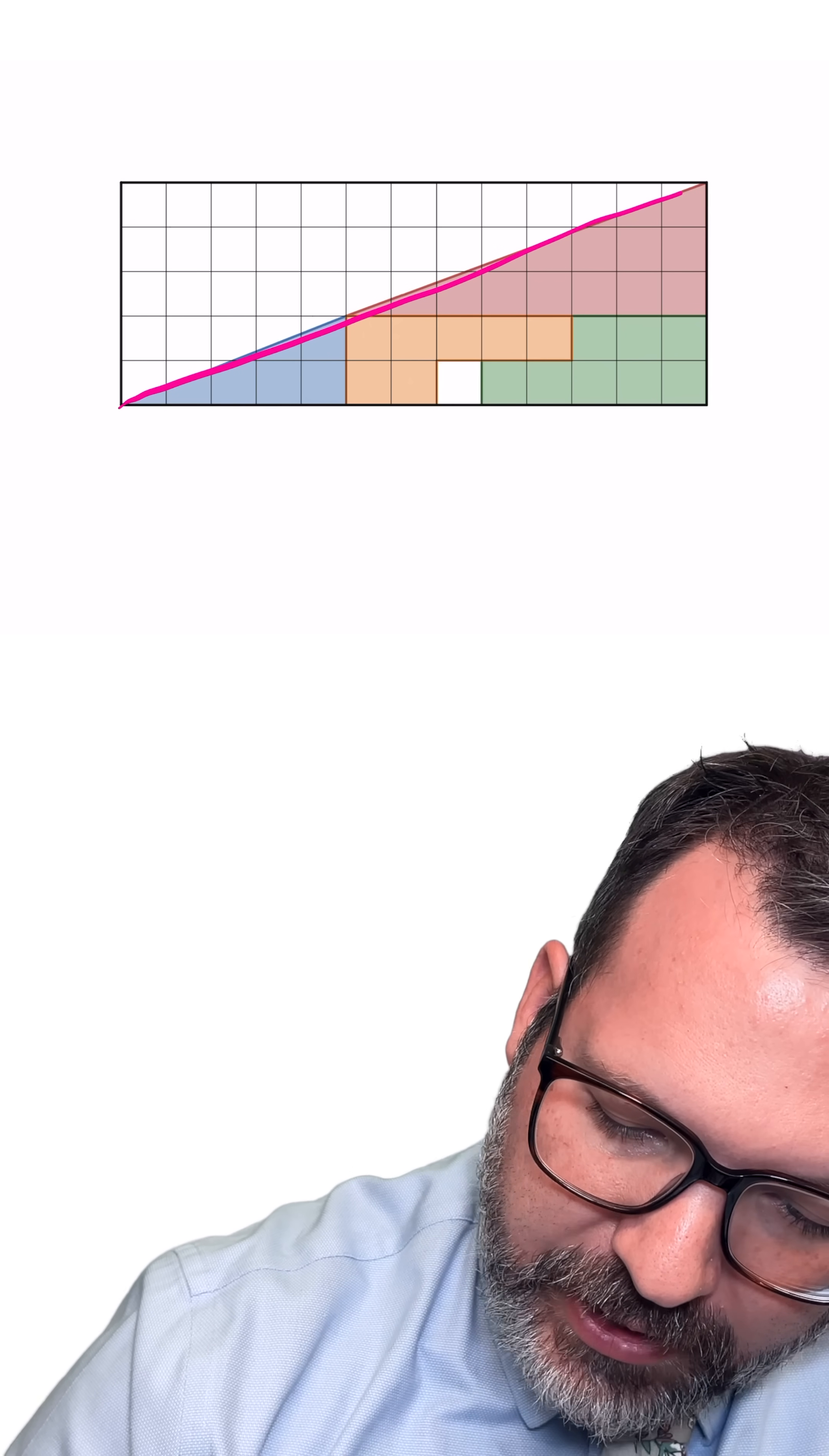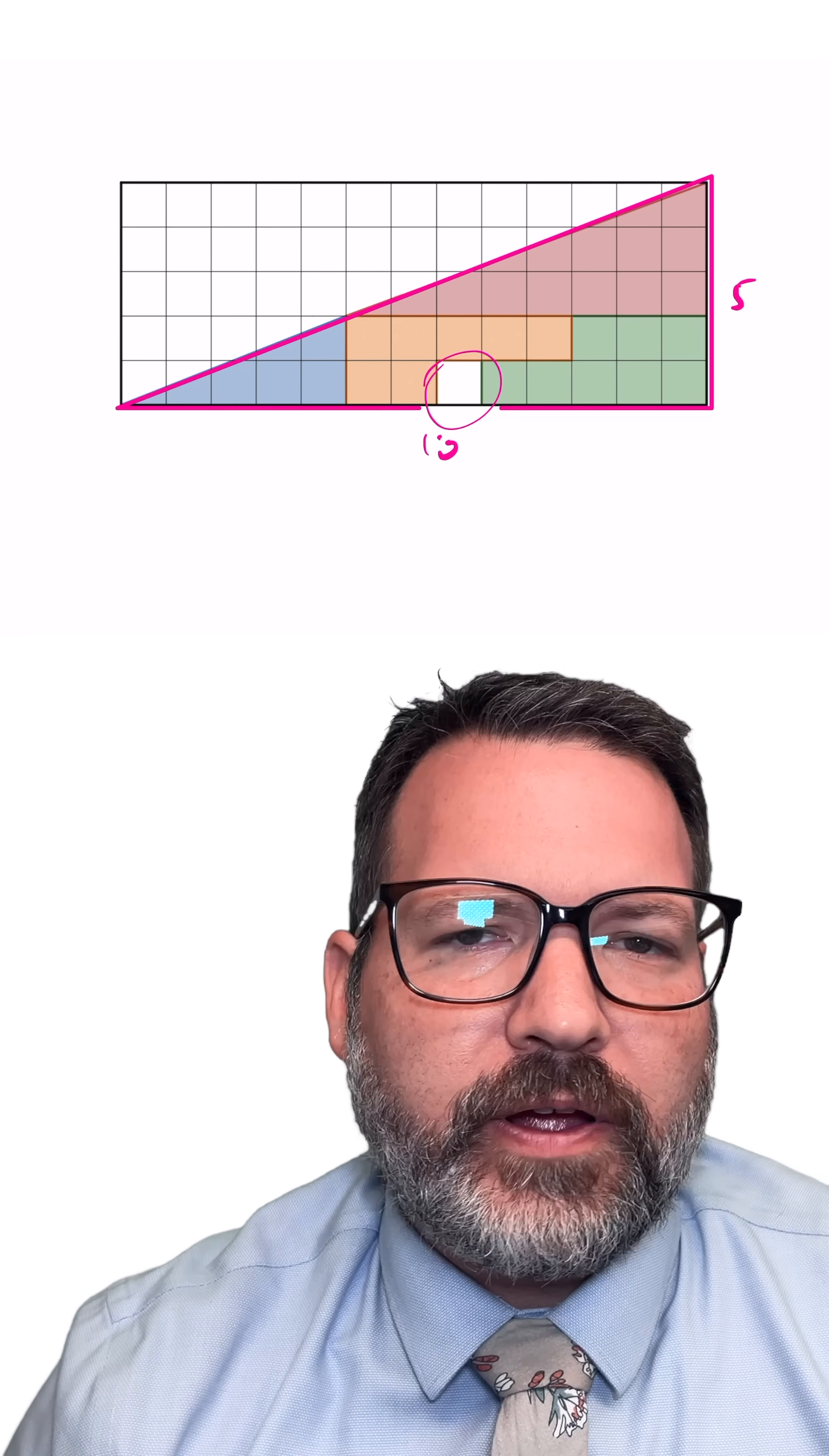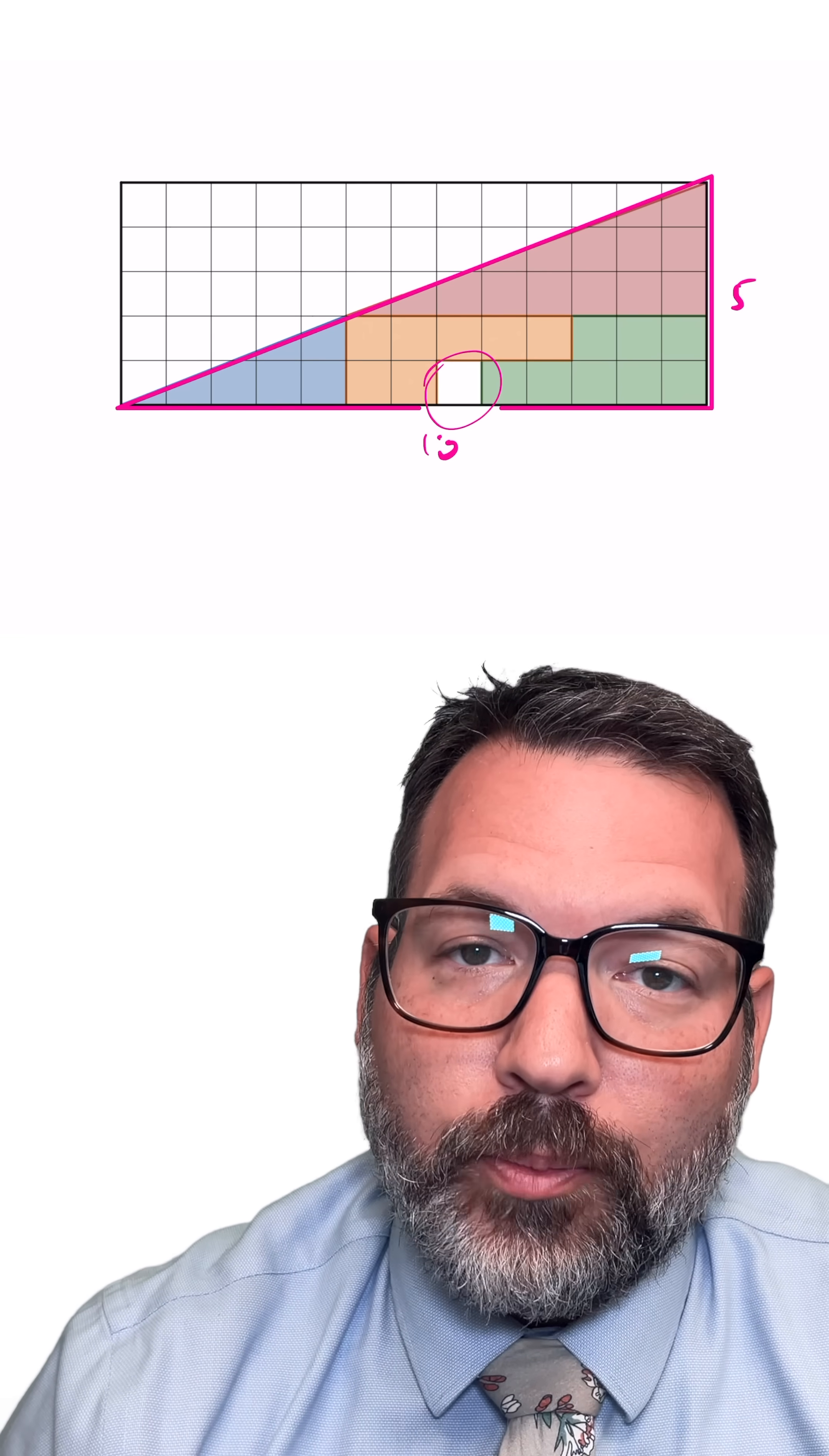When I rearrange the pieces, however, I'm looking at what appears to be that same 5 by 13 right triangle, which should have the same area, but is rather obviously missing a block. And so we would assume now, is the area 31.5? We can't have a figure that has an area of both 32.5 square units and 31.5 square units. This missing block has to be coming from somewhere.